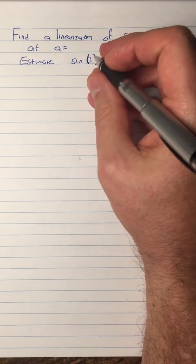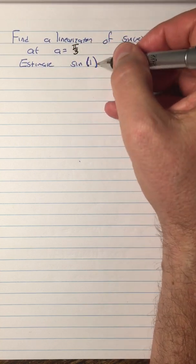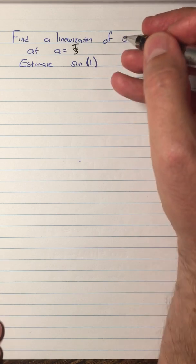You might recall from our opening discussion, the natural a to use is π/3, because we know what the sine of π/3 is, and that is close to 1. So that's going to be our a: a equals π/3.